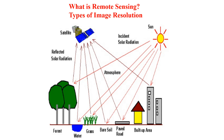Hello everyone, this is Dr. Poonam Pathakar, and today I am going to explain what is meant by remote sensing and types of image resolutions. Remote sensing is an art and science of obtaining information about an object without any physical contact with these objects. Remote sensing is the process of recording the reflected electromagnetic radiations by the sensing system and generation of sensor data in pictorial or digital formats.